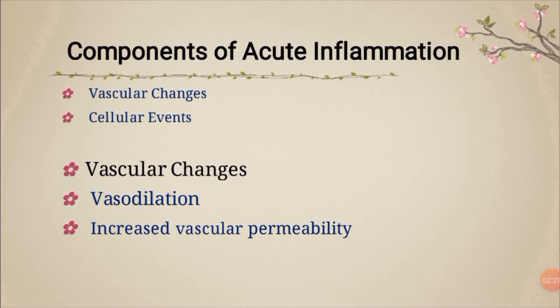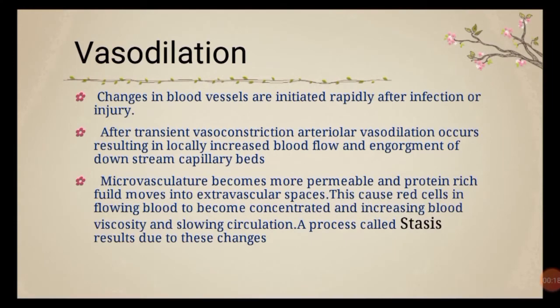The components of acute inflammation are two: vascular changes and cellular events. Vascular changes include vasodilation and increased vascular permeability. Vasodilation is basically an increase in the calibre of a vessel. Changes in blood vessels are initiated rapidly after infection or injury — in acute inflammation, the changes are always rapid.